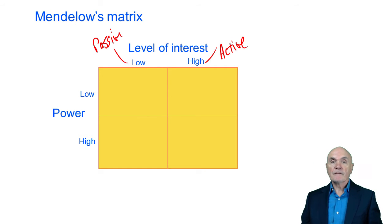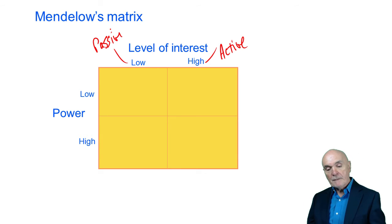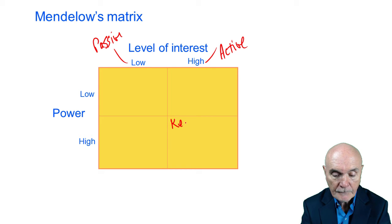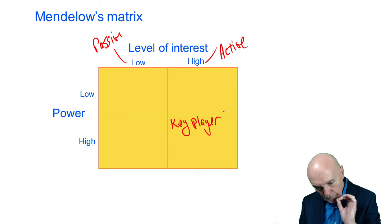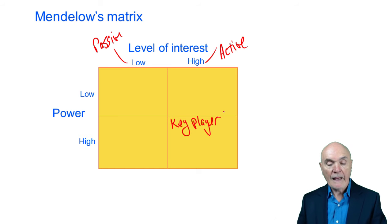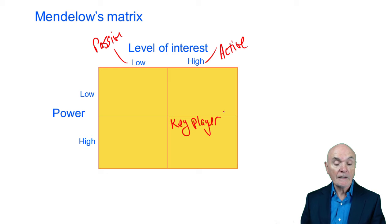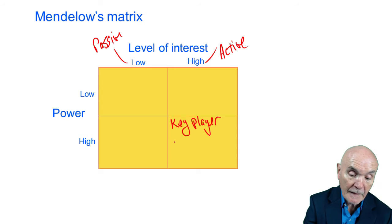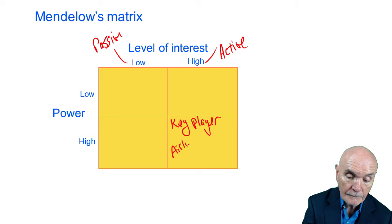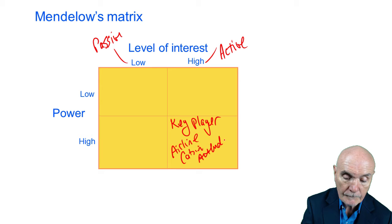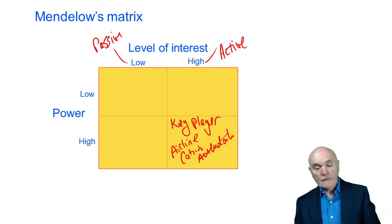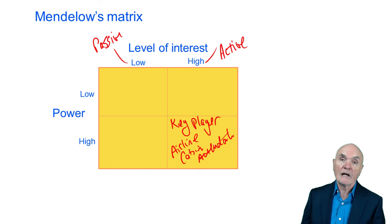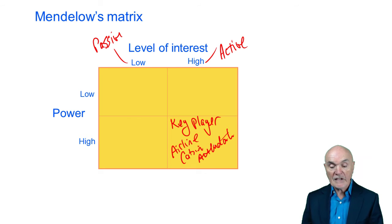If you have high power and high interest, then you're what's called a key player. You have the power and because you're active you will use it to get your own way. Management has to watch these people very carefully, and very often these people get exactly what they want. Examples of key players would be airline cabin attendants.